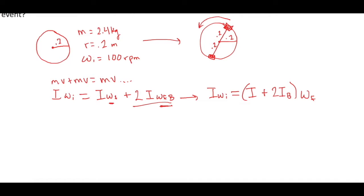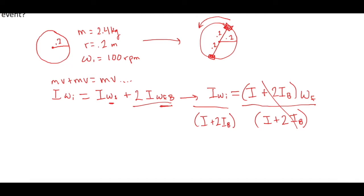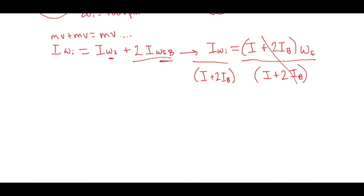Now we need to isolate omega final. We divide both sides of the equation by I-turntable plus 2I-blocks, and those cancel on the right side. So omega final equals I·omega initial for the turntable, all over I for the turntable plus 2I for the blocks.